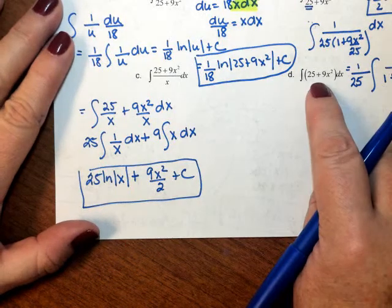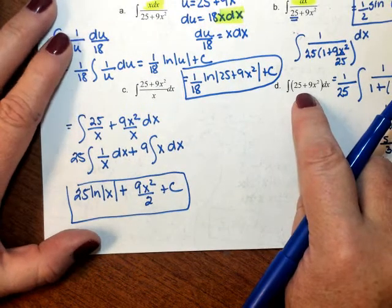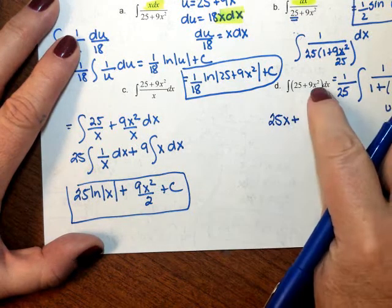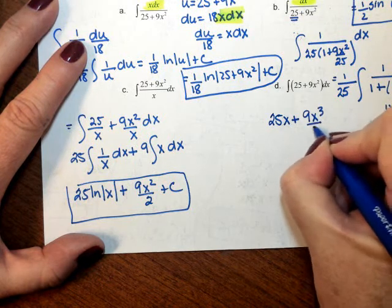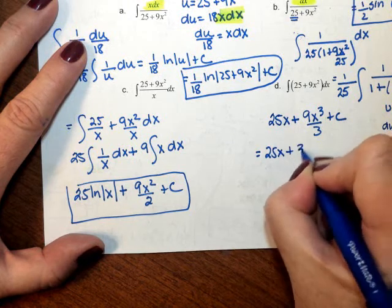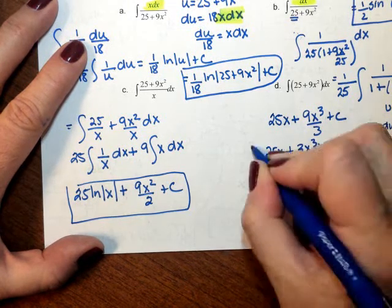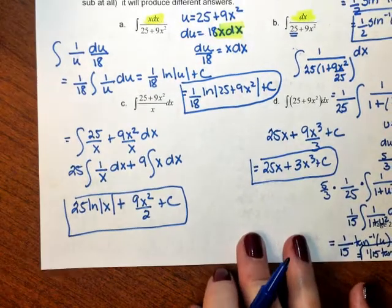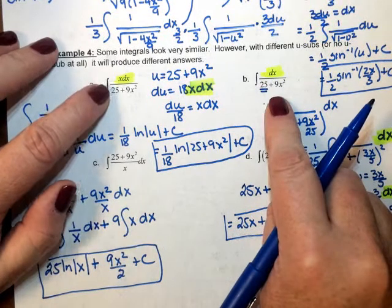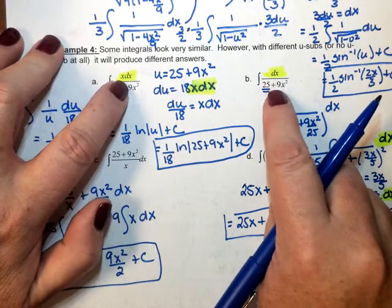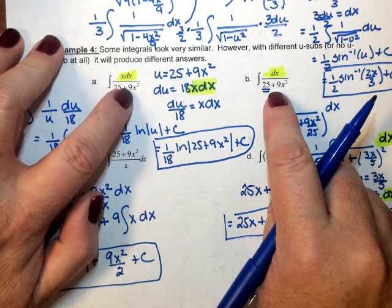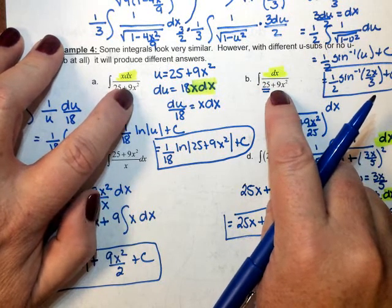For letter D, I'm just going to integrate term by term. When I integrate 25, that's 25x. When I integrate 9x squared, that's 9x to the third over 3, so my final answer is 25x plus 3x to the third plus C. When looking at rational expressions, the way you approach them can be very different even if they look almost identical. With an x in the numerator over x squared in the denominator, you'd use a u sub; without that x, you use inverse trig. Thank you.